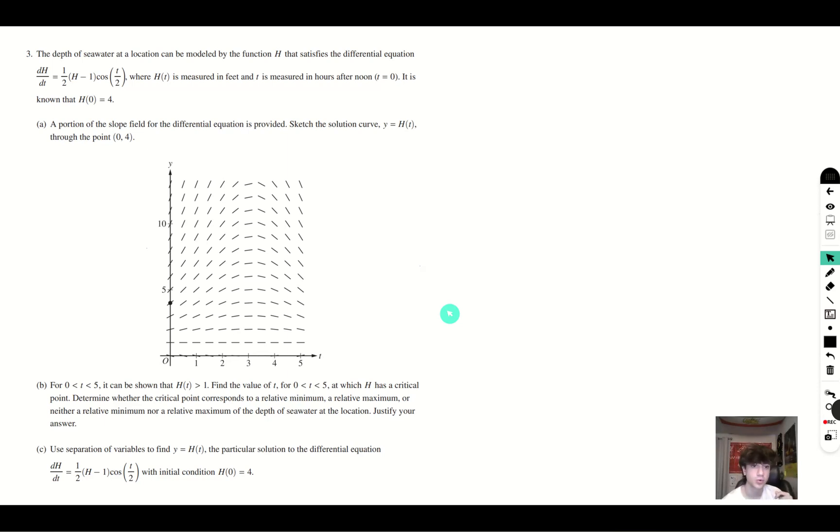Part a says a portion of the slope field for the differential equation is provided. Sketch the solution curve y equals h of t through the point zero four. This part is pretty straightforward. You just follow the line that is provided, see where the next line leads to, like so. And here you have your solution curve, not much else you need to do. So let's move on to part b.